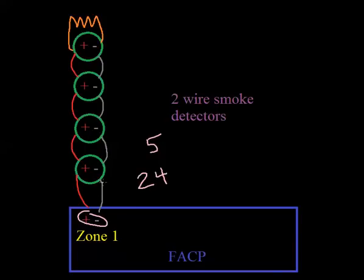So on a two-wire smoke detector, the zone is what powers the detector and what detects the alarm.